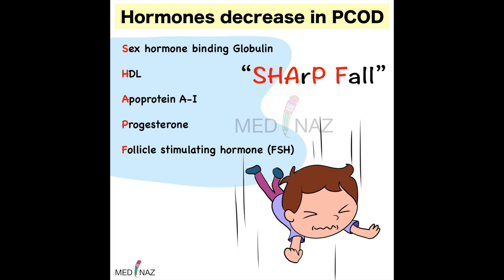The next mnemonic is for hormones which decrease in PCOD. The mnemonic is SHARP FALL. Follow the red letters: A for sex hormone binding globulin, H for HDL, then apoprotein A1, then progesterone, then follicle stimulating hormone.